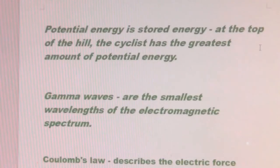Magnesium oxide cannot be found in the periodic table because it is a compound of two elements. Potential energy is stored energy. At the top of the hill, the cyclist has the greatest amount of potential energy.